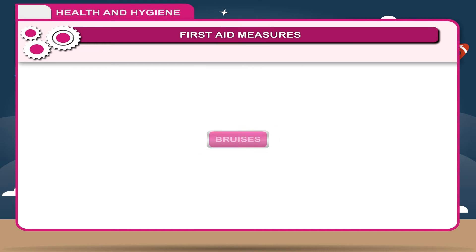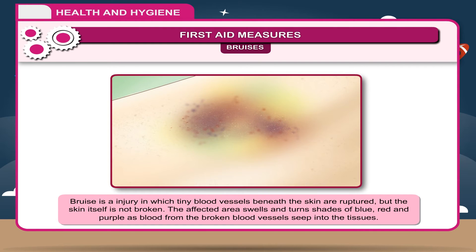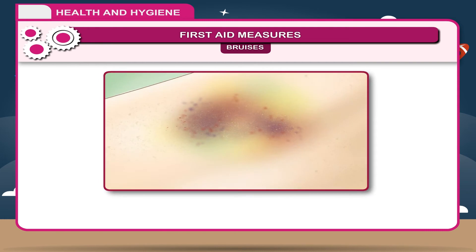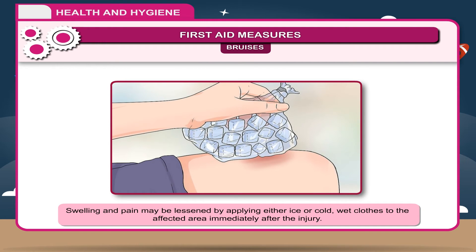Bruises: 1. A bruise is an injury in which tiny blood vessels beneath the skin are ruptured, but the skin itself is not broken. The affected area swells and turns shades of blue, red and purple as blood from the broken blood vessels seeps into the tissues. 2. Swelling and pain may be lessened by applying either ice or cold, wet cloths to the affected area immediately after the injury.